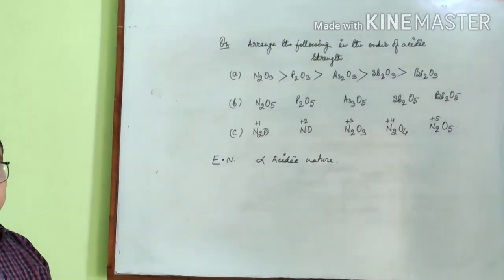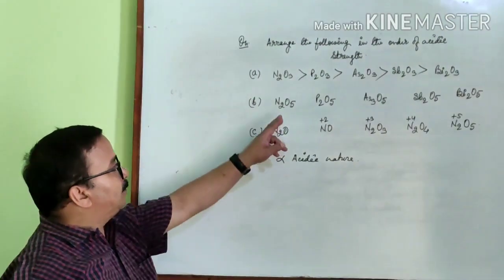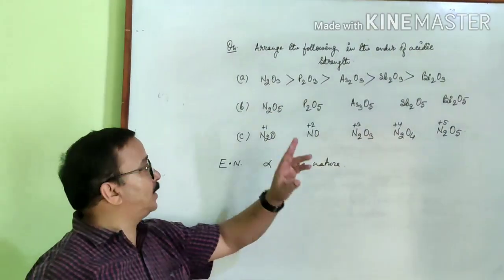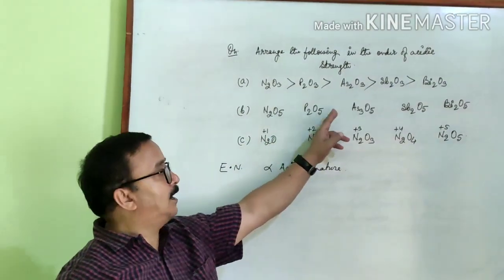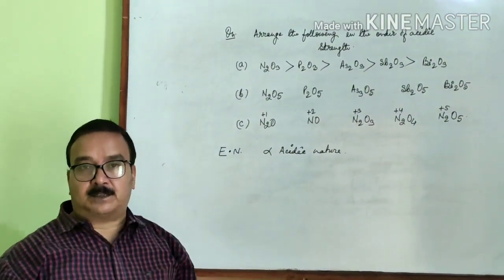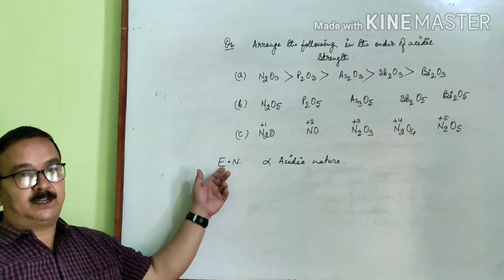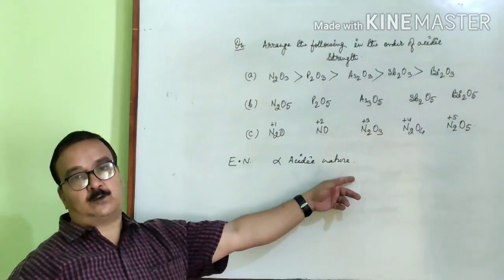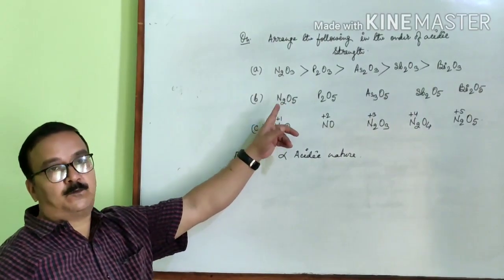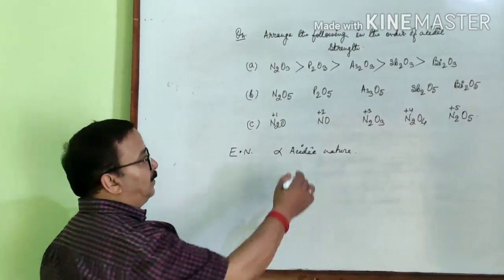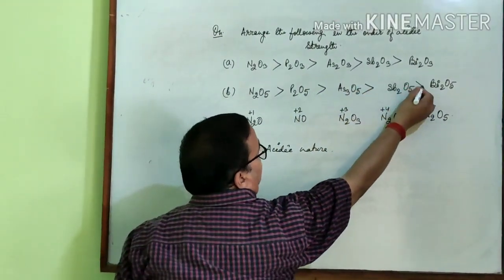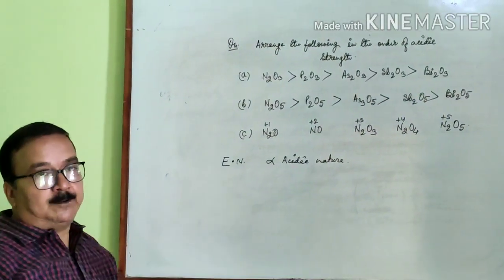Now second one, number B: all are pentaoxides, all the central elements are different - nitrogen, phosphorus, arsenic, antimony, bismuth. Same concept applies that electronegativity is directly proportional to acidic nature. Obviously N2O5, nitrogen is most electronegative, so most acidic.